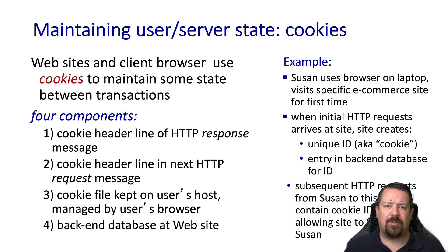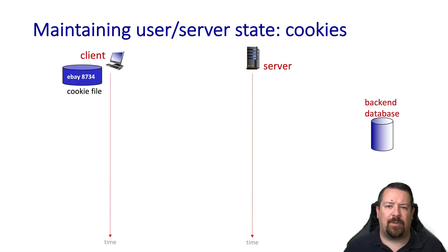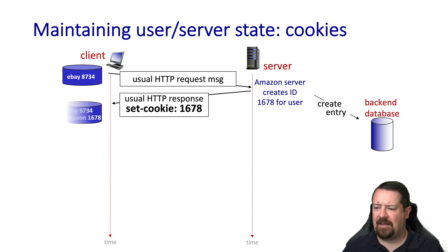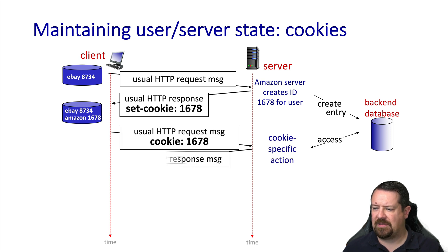For example, if a user is browsing an e-commerce website for the first time, they will not have an existing cookie for that site. The site will create a new cookie ID and a corresponding new database entry. Subsequently, when that same browser connects to the website, it will send this cookie ID with it. In the example shown, this client has previously been to eBay and has a cookie with an ID specific to eBay. When it connects to Amazon for the first time, it sends an HTTP request with no cookie — Amazon creates a new ID and a new database entry. The response message includes a directive for the client to set the cookie with this new ID, so now the client has two cookies stored. Whenever the client requests resources from the same server, it includes the cookie ID, allowing the server to associate those requests with the same user in its backend database.